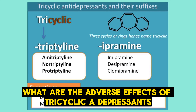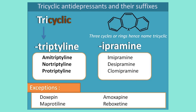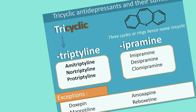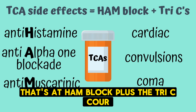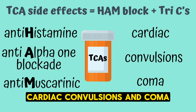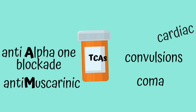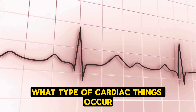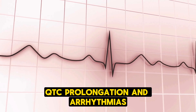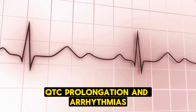What are the adverse effects of tricyclic antidepressants? TCA side effects are the HAM block plus the 3 Cs: cardiac convulsions and coma. What type of cardiac things occur? QTc prolongation and arrhythmias.